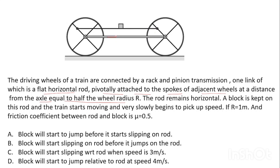This is the axle connecting the two wheels and this is the rod on which a block is placed. The rod always remains horizontal because the distance is fixed. The wheel radius is given as r, and the attachment point is fixed at r/2, half the spoke radius. The friction coefficient between the block and the rod is given as mu. The question asks whether the block will jump first or slide first, and at what velocity each event occurs.